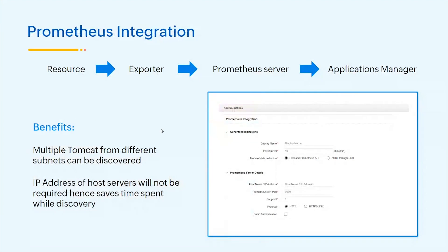The next integration is Prometheus. We support Prometheus for both Tomcat and OpenShift. With this integration, you'll be able to automatically discover your Tomcat and OpenShift servers, saving you the manual task of entering IP addresses every time. We have two methods for this: the Exposed API method and the SSH option.